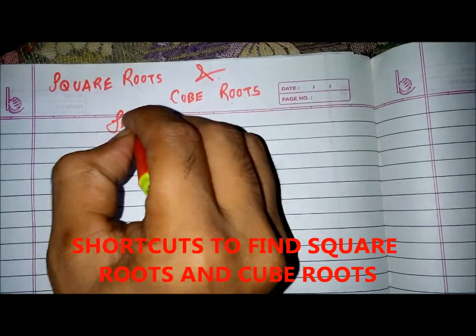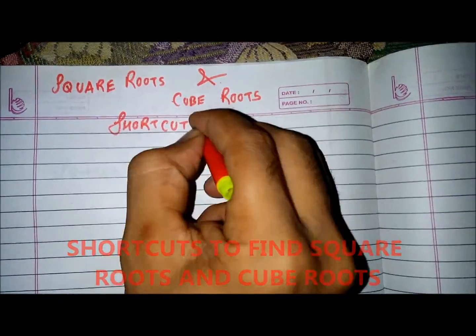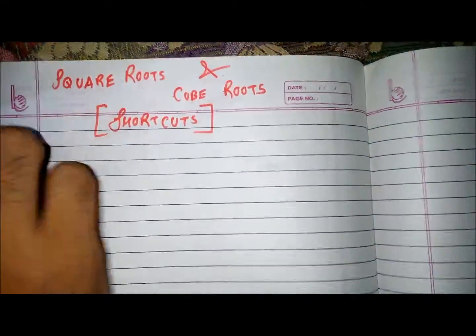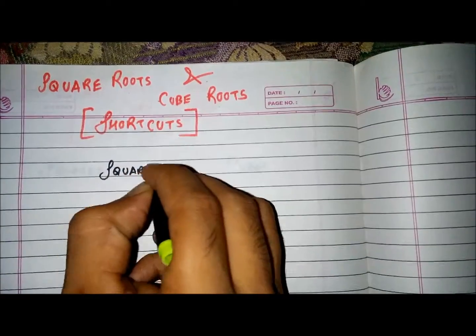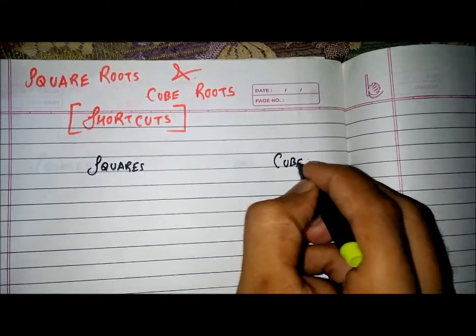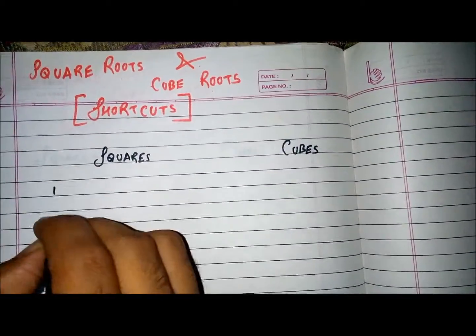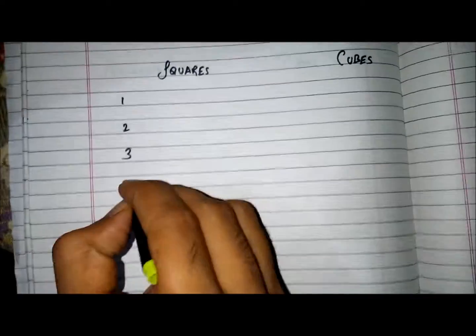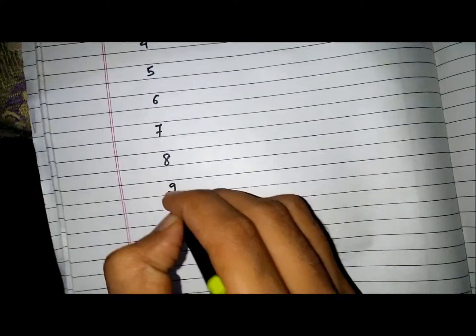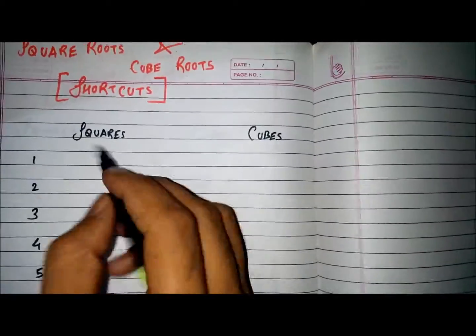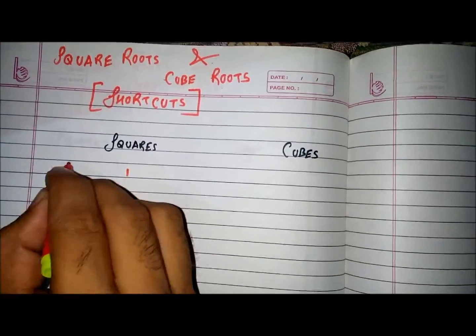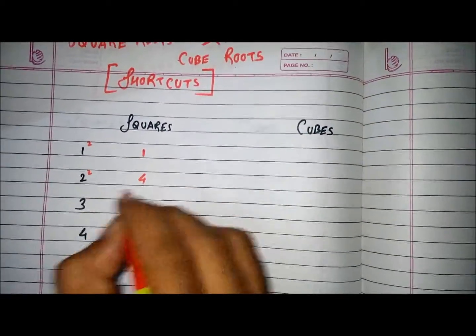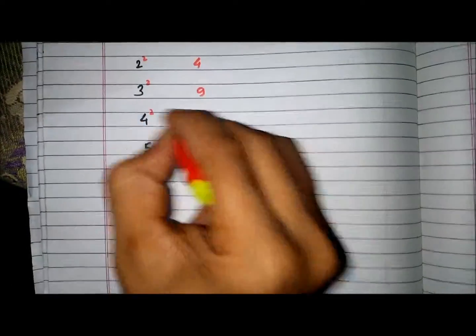This video is all about how to find square roots and cube roots using shortcuts. First of all, you should know all the squares and cubes from 1 to 9.